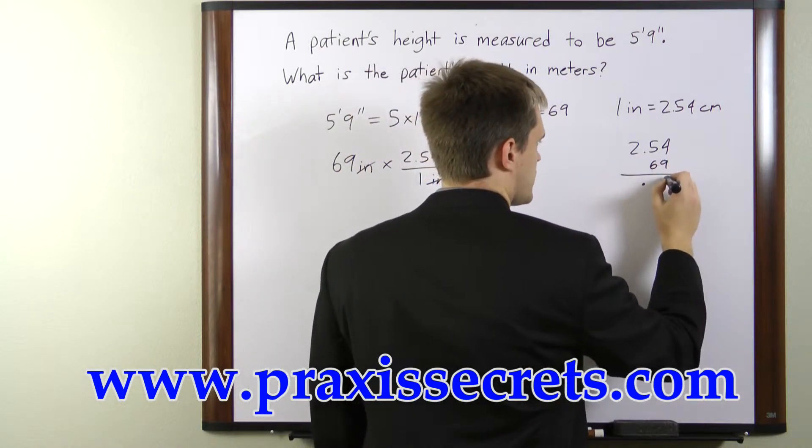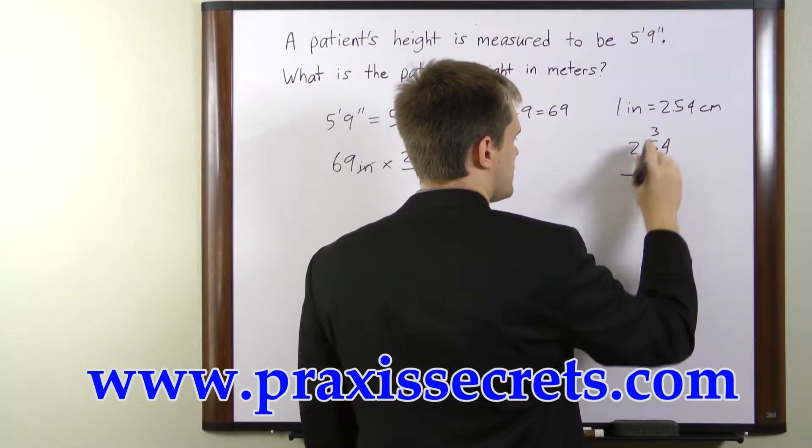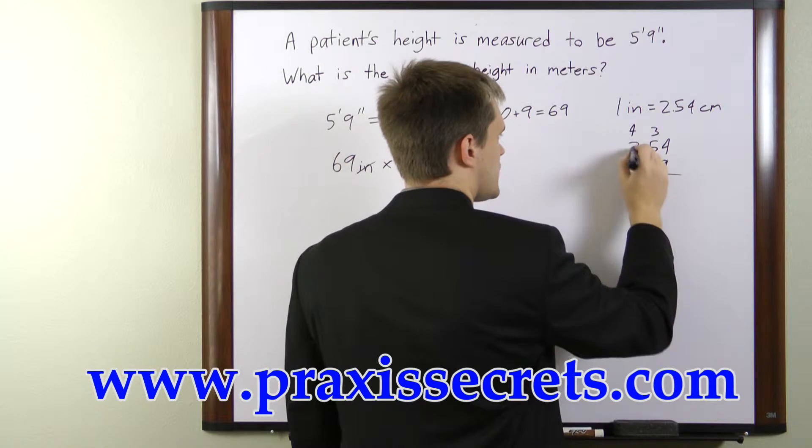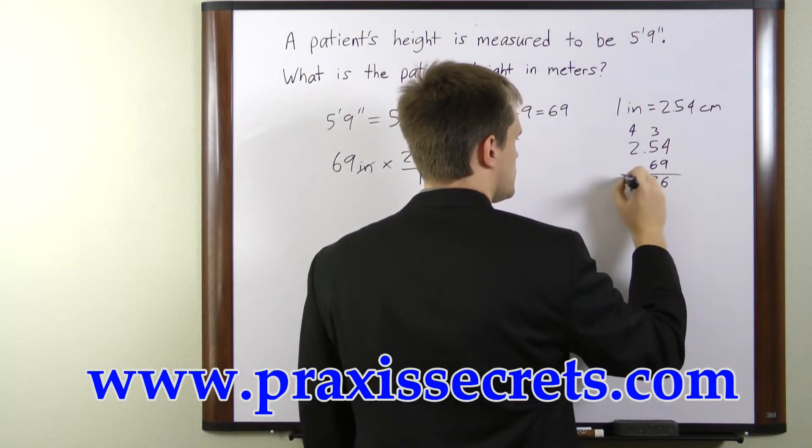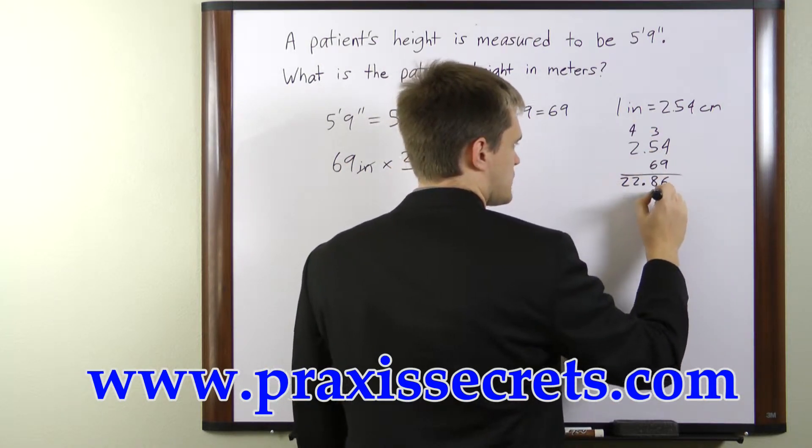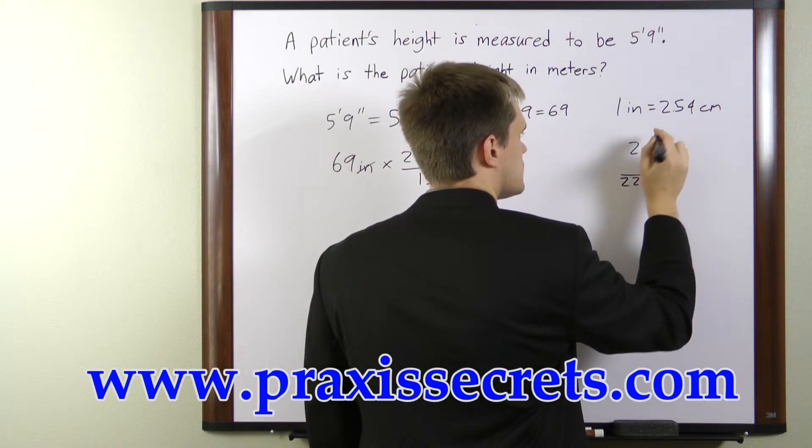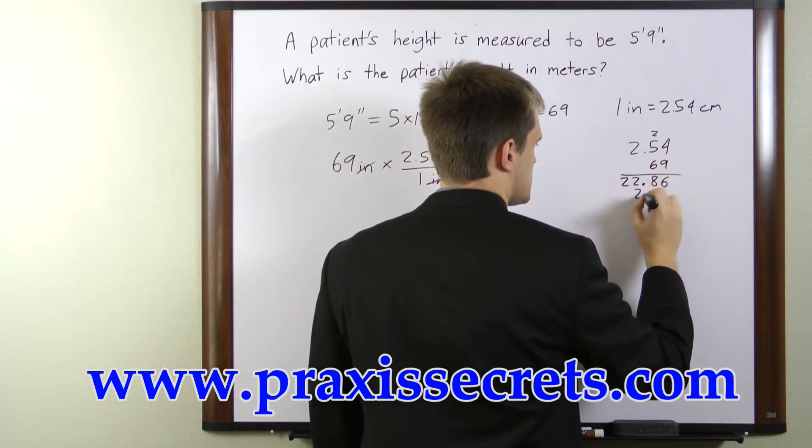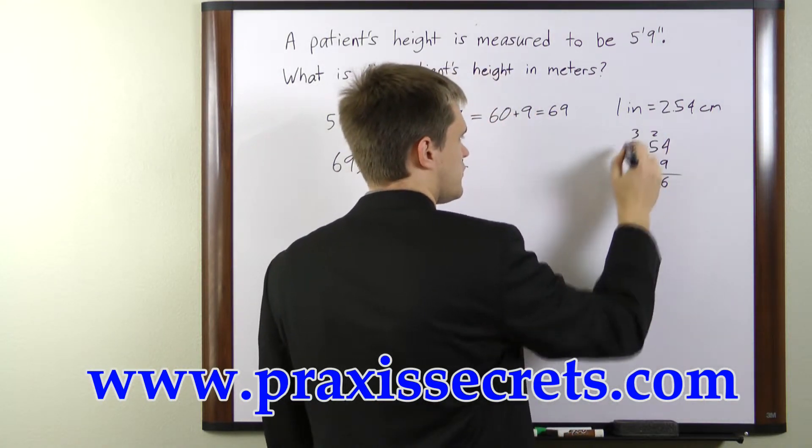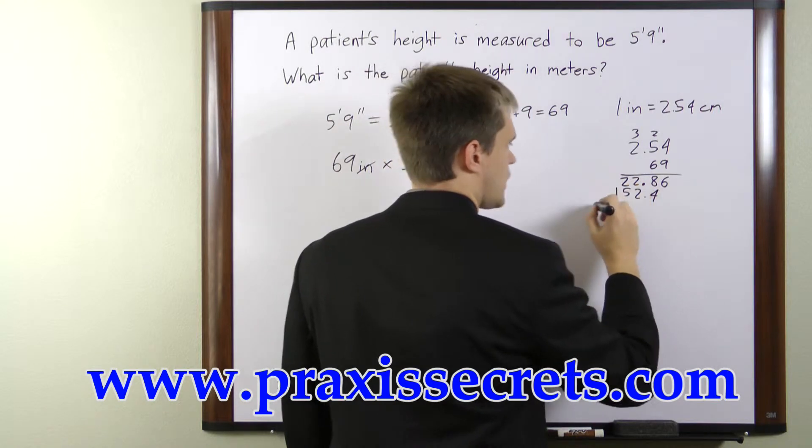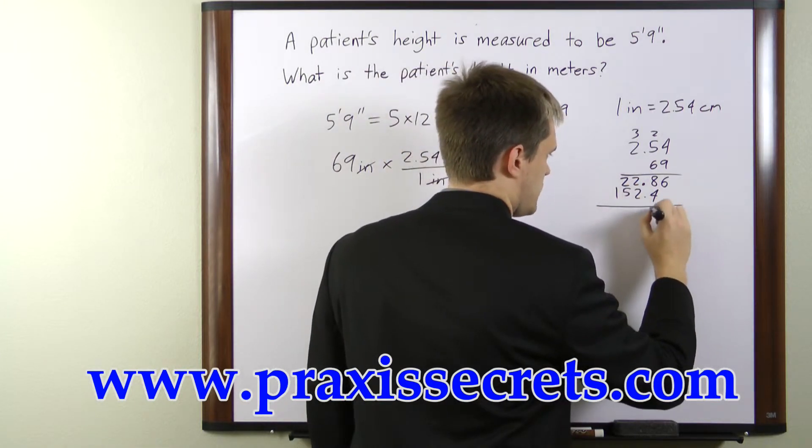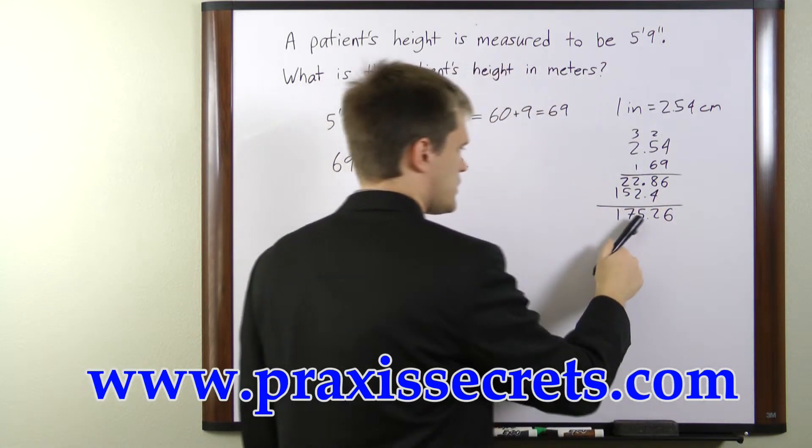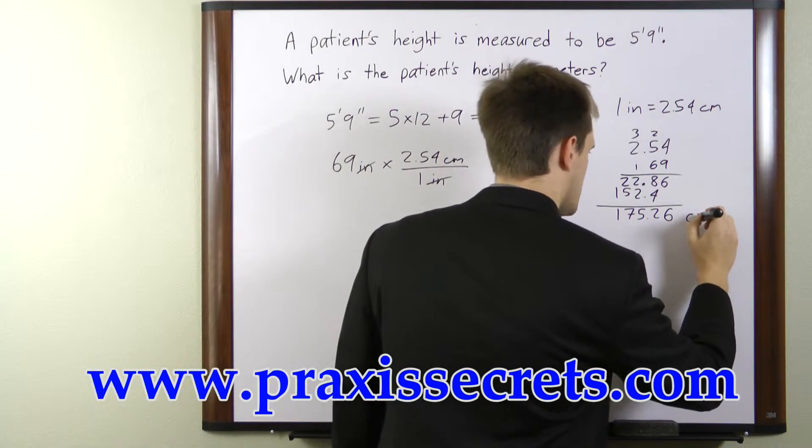So 2.54 times 69. 9 times 4 is 36. 9 times 5 is 45 plus 3 is 48. 9 times 2 is 18 plus 4 is 22. 6 times 4 is 24. 6 times 5 is 30 plus 2 is 32. 6 times 2 is 12 plus 3 is 15. So we'll add these up and that gives us 175.26 centimeters.